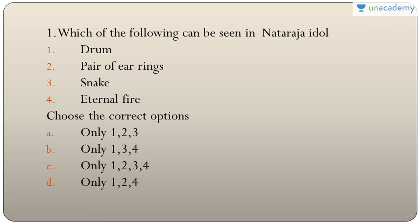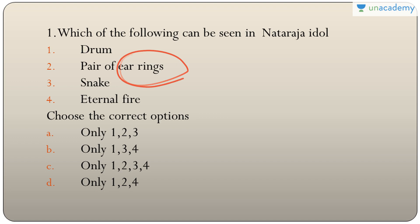Question one: which of the following can be seen in the Nataraja idol — drum, pair of earrings, snake, eternal fire? A drum, snake, and eternal fire are present. Earrings are present but not a matching pair — one is male and one is female, denoting the Ardhanarishvara character of Shiva. The answer is B — only one, three, and four.